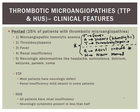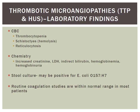Laboratory findings in thrombotic microangiopathies include thrombocytopenia on CBC, and schistocytes or reticulocytes on peripheral smear indicating hemolysis. In chemistry, increased creatinine is seen especially in HUS, along with increased LDH and increased indirect bilirubin. Hemoglobinemia or hemoglobinuria may be seen due to increased hemolysis. Stool cultures may be positive for E. coli especially in HUS. Routine coagulation studies — PT and APTT — will be normal because this is a platelet destruction issue, not a factor issue.